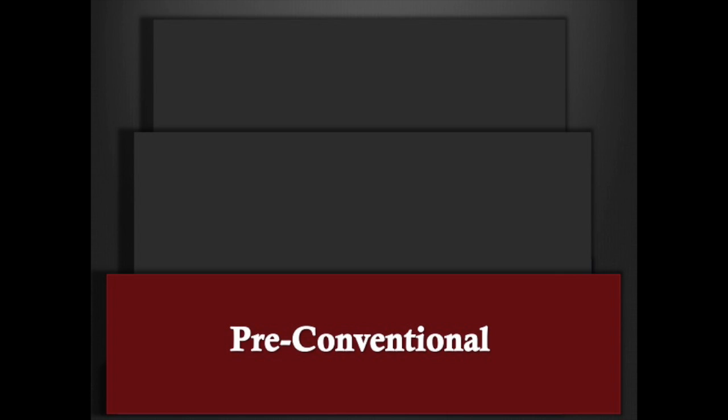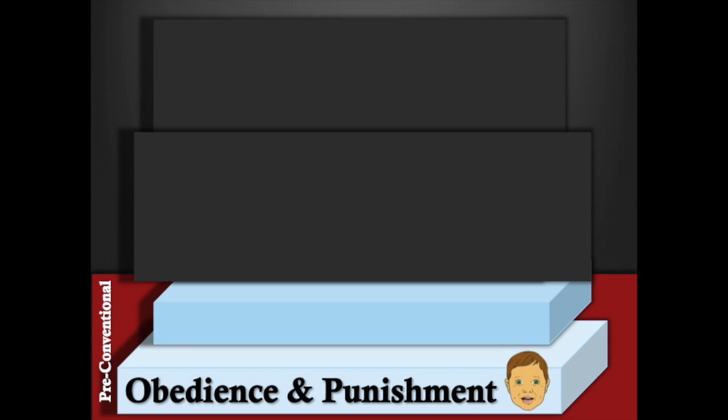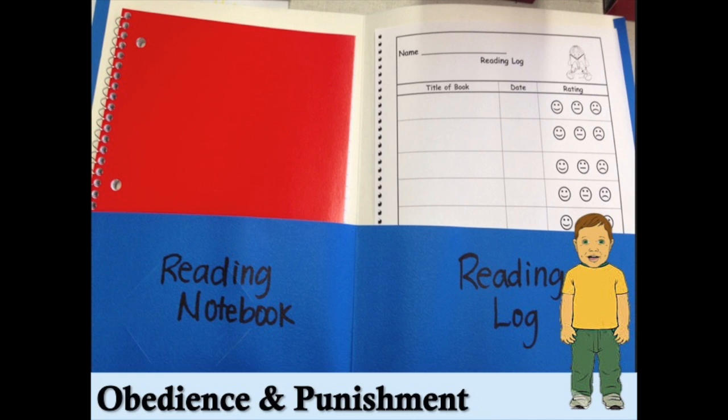Let's look at the pre-conventional morality level consisting of stages one and two. Stage one: obedience and punishment. The child is motivated to avoid punishment and has little or no independent moral reasoning. For example, the teacher tells Bobby he didn't get his reading log signed by his parents yesterday. Bobby tells the teacher his parents forgot. The teacher gives him one more chance, warning that if it's not signed, he will get a color change on his folder. Bobby makes sure his parents sign his reading log because he doesn't want a color change.